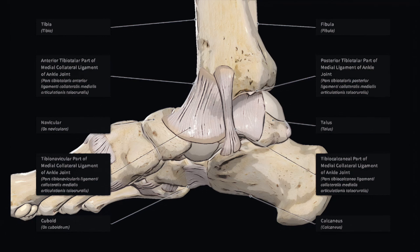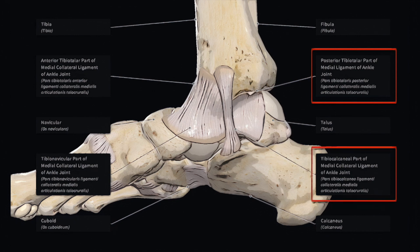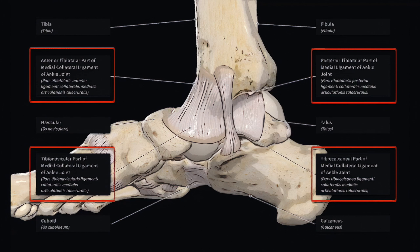The medial ligament, or deltoid ligament, is a fan-shaped ligament extending from the medial malleolus anteriorly to the navicular and talus, inferiorly to the calcaneus, and posteriorly to the talus. It is comprised of the posterior tibiotalar, the tibiocalcaneal, the tibionavicular, and the anterior tibiotalar ligaments. The medial ligament is much stronger than the lateral ligament and does not permit as much mobility at the subtalar joint. It is typically injured during forced eversion and dorsiflexion of the foot.